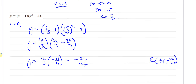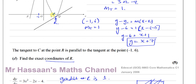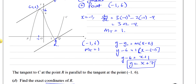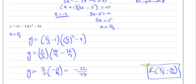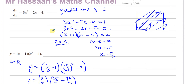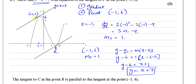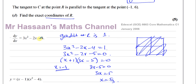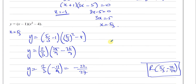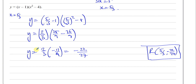So the exact coordinates of R are (5/3, -22/27) — written in exact fractional form, unrounded. To summarize part D: there are two points on the curve sharing the same gradient. We equate the gradient function to 1 and solve, finding two x-values. One is x equals minus 1, already known. The other, x equals 5/3, is the x-coordinate of R. Substituting back into the original equation gives the y-coordinate, negative 22 over 27.